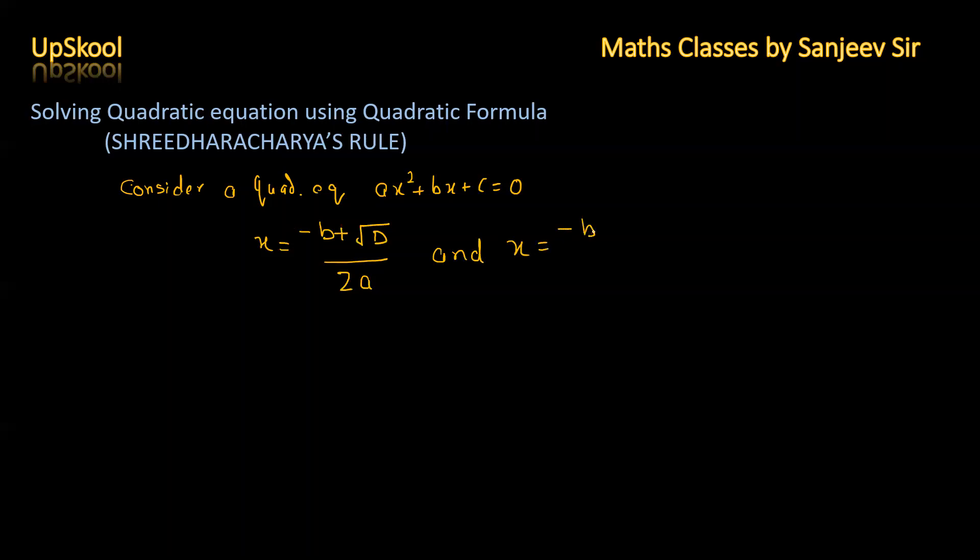minus b minus square root of d upon 2a. Now what is this capital d? This is called discriminant, denoted by capital D, calculated as b square minus 4ac. The given equation will have real roots if the value of D is greater than or equal to 0.